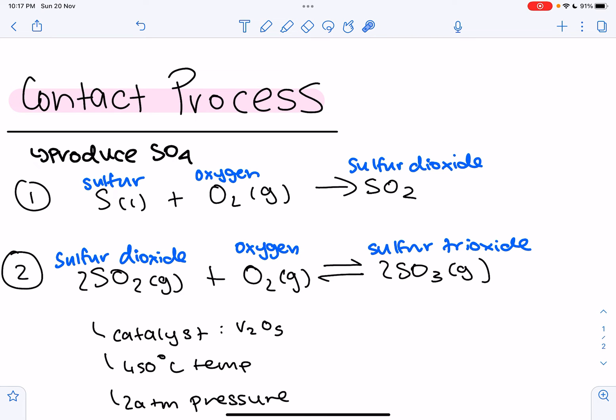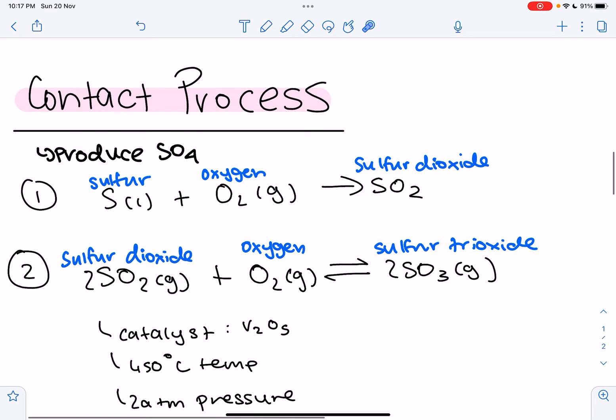Stage one would be the production of sulfur dioxide. So we start with sulfur, and we burn it in air, and then we get sulfur dioxide. So this reaction is irreversible, and it's important to remember that.